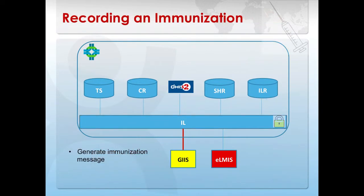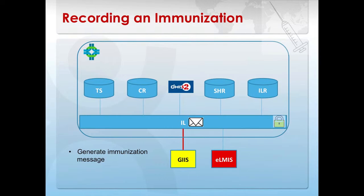Let's look at a specific immunization event. We start with a nurse in a clinic providing a vaccine to a child. At that point, the GIIS system generates an immunization message. The GIIS system then sends that message up into the interoperability layer where validation and orchestration of that message can occur. The message is sent in XDS.B format, which is a standard from IHE. The next question we want to validate is who received that vaccine. For that, we go to the client registry, look at the subject of care referenced in that message, and ensure it is a valid subject of care — using the PDQ or PDQM profile from IHE.